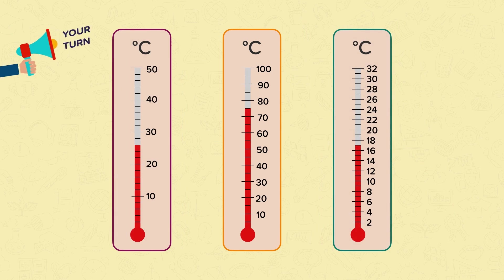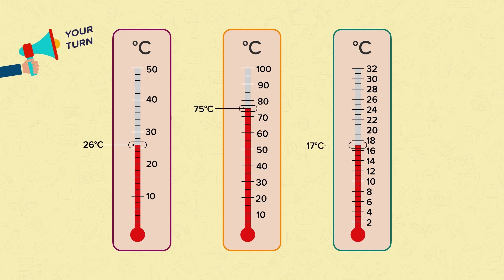Now it's your turn to have a go at reading these thermometers. Pause the video and have a go. The numbers on the first thermometer go up in tens, but the little lines go up in twos, so the temperature shown is 26 degrees Celsius. On the next one, the red line is halfway between 70 and 80, so the temperature is 75 degrees Celsius. On the final thermometer, the red line is halfway between 16 and 18, so the temperature shown is 17 degrees Celsius.